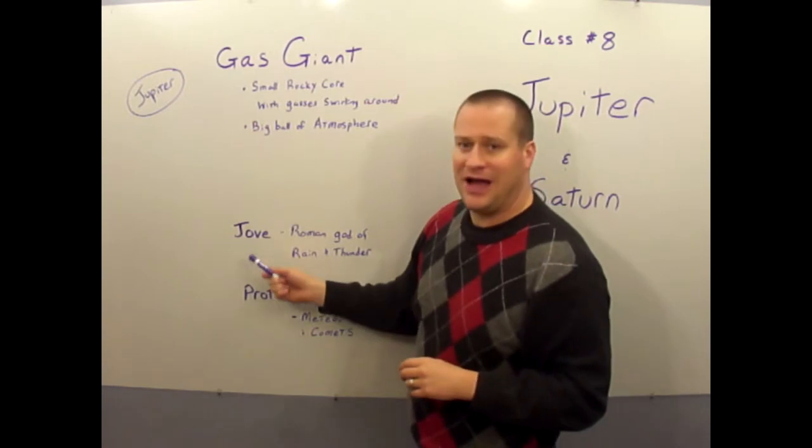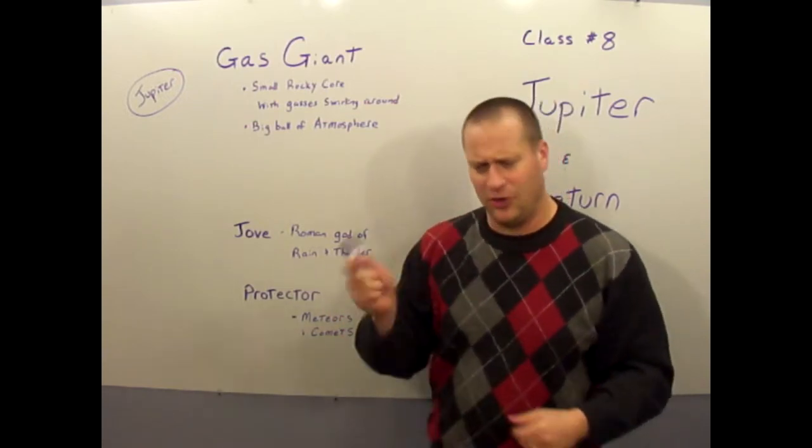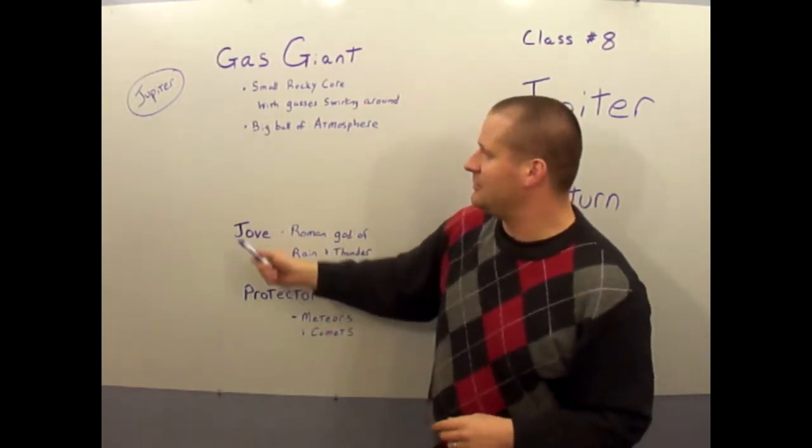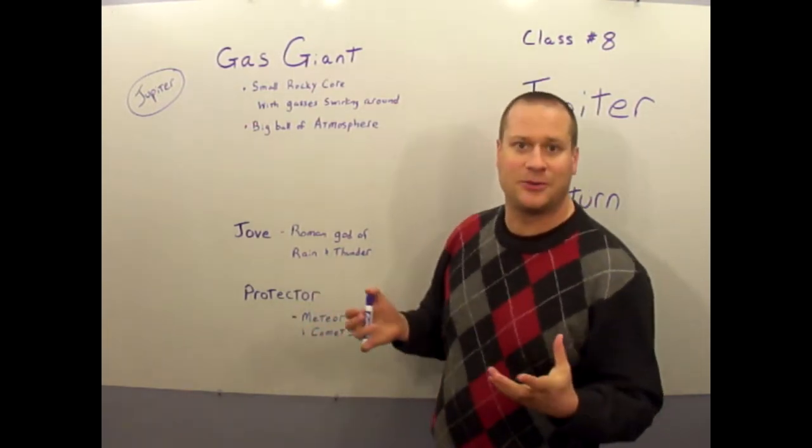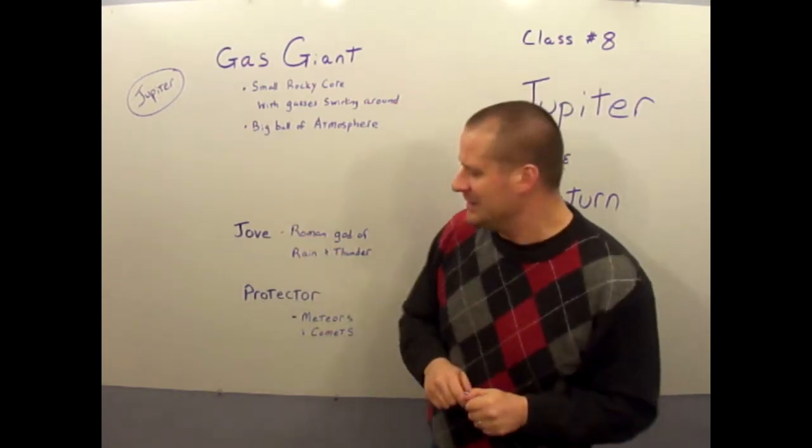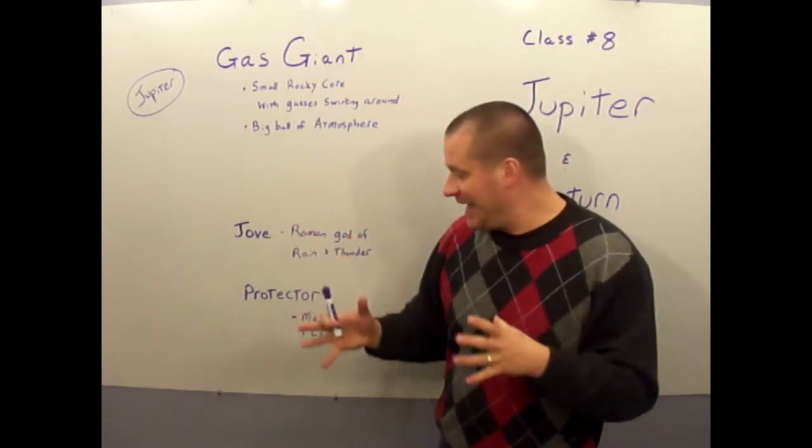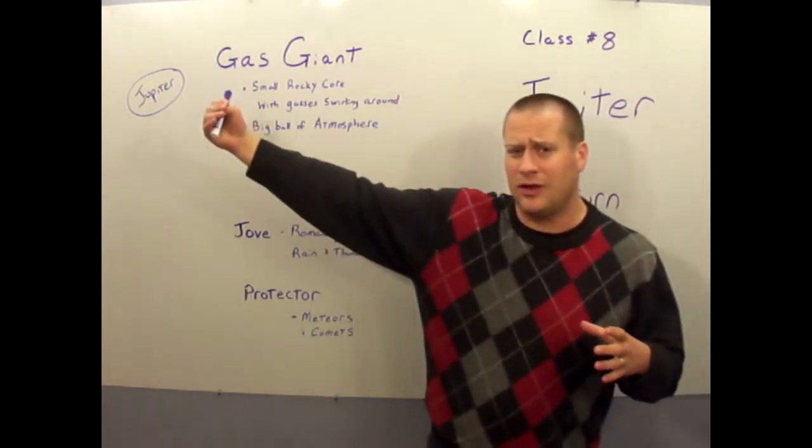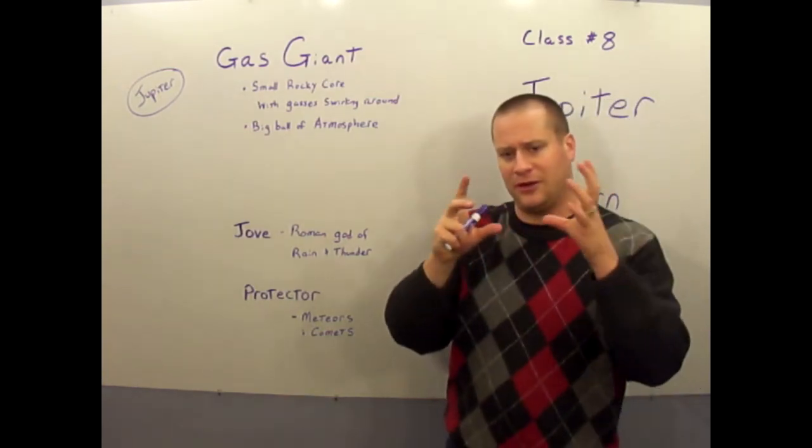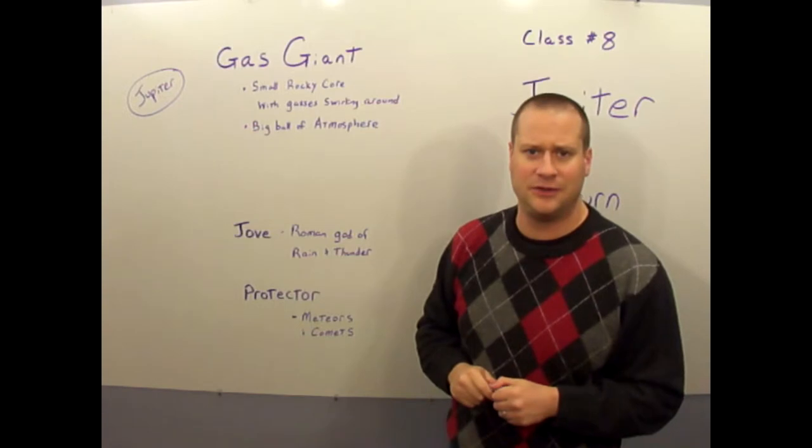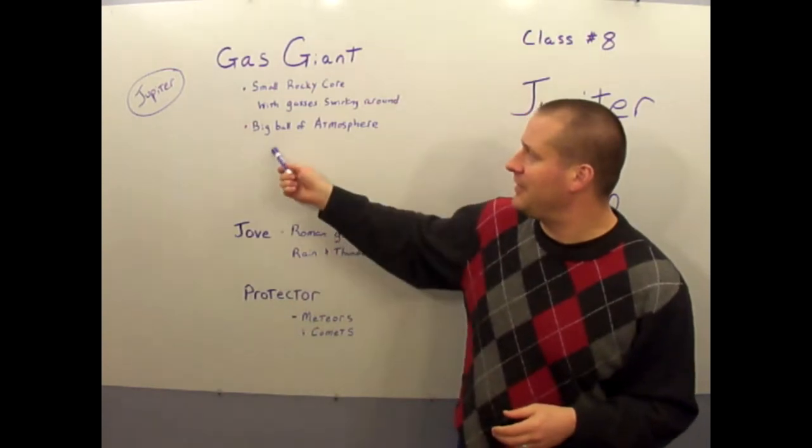Jupiter was named after the Roman god Jove, who's the Roman god of rain and thunder. You've heard the expression by Jove, I think he's got it. It's interesting because this planet serves as a protector planet in our solar system. The gravity, because it's such a huge planet, protects from meteors and comets. So like if a meteor or comet entered into our solar system, the gravity of Jupiter would pull it away and help protect it from getting further into the solar system to maybe hit planet Earth.